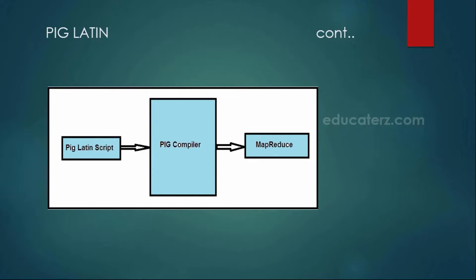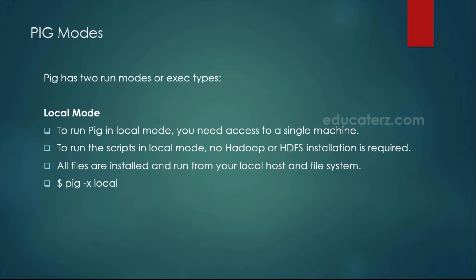The PIG compiler also consists of a parser. In case of any syntactical or semantical errors, it will analyze them. The compiler makes sure that whatever PIG Latin script is written, it converts your program into MapReduce code. To write the PIG script, we use a shell called the Grunt shell. By opening the Grunt shell, we write the PIG Latin language to process our raw data.